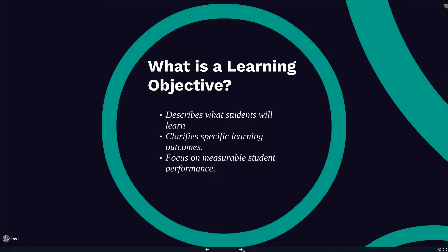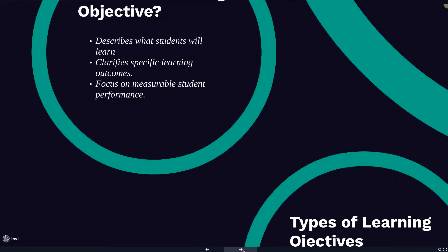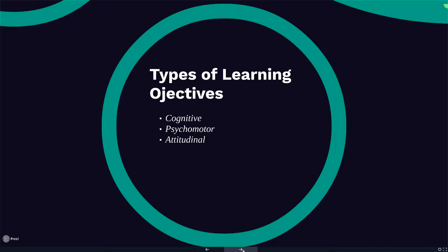A learning objective focuses on student performance. It utilizes action verbs and should state the behavior students will be expected to perform. Well-written learning objectives can give students precise statements of what is expected of them and provide guidelines for assessing student progress.